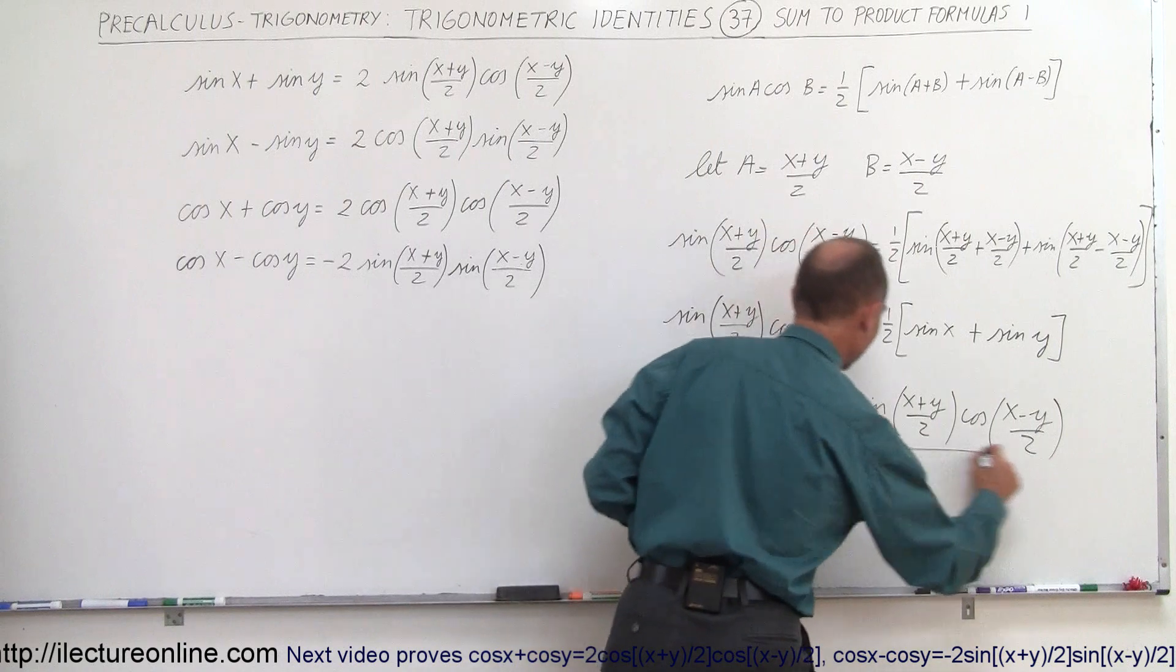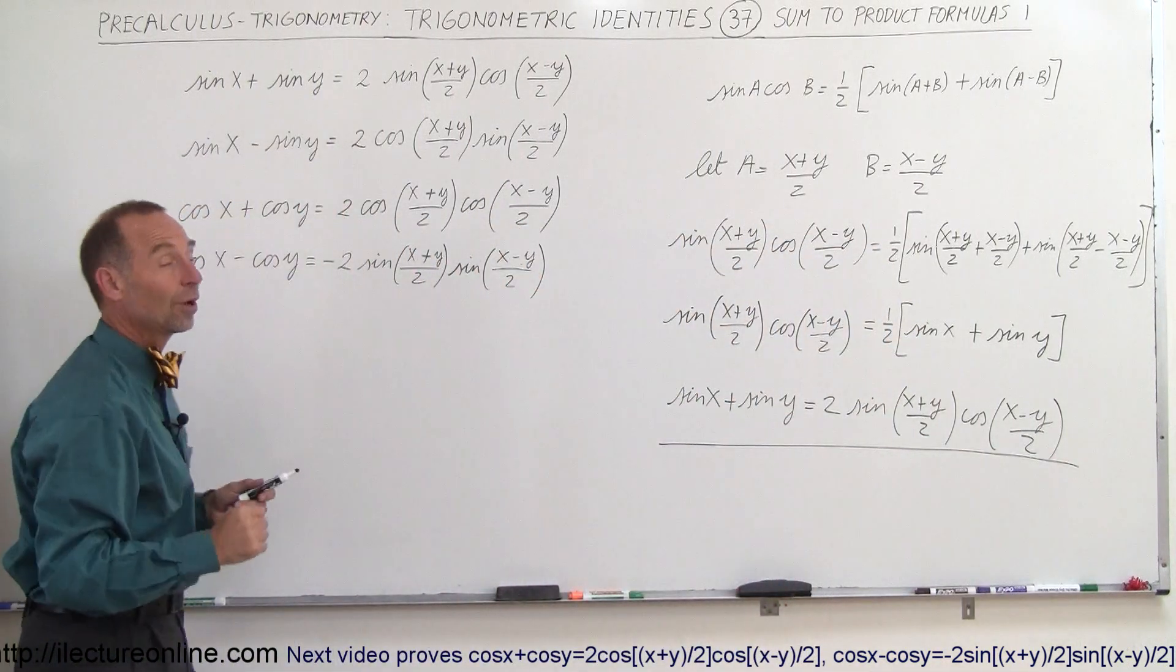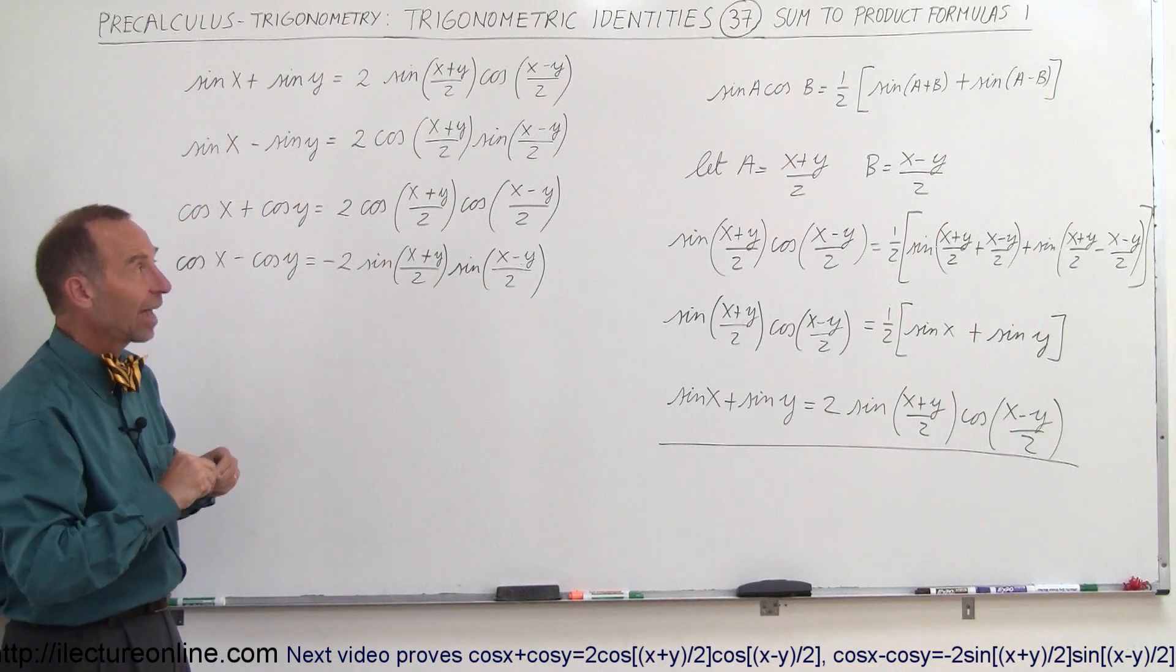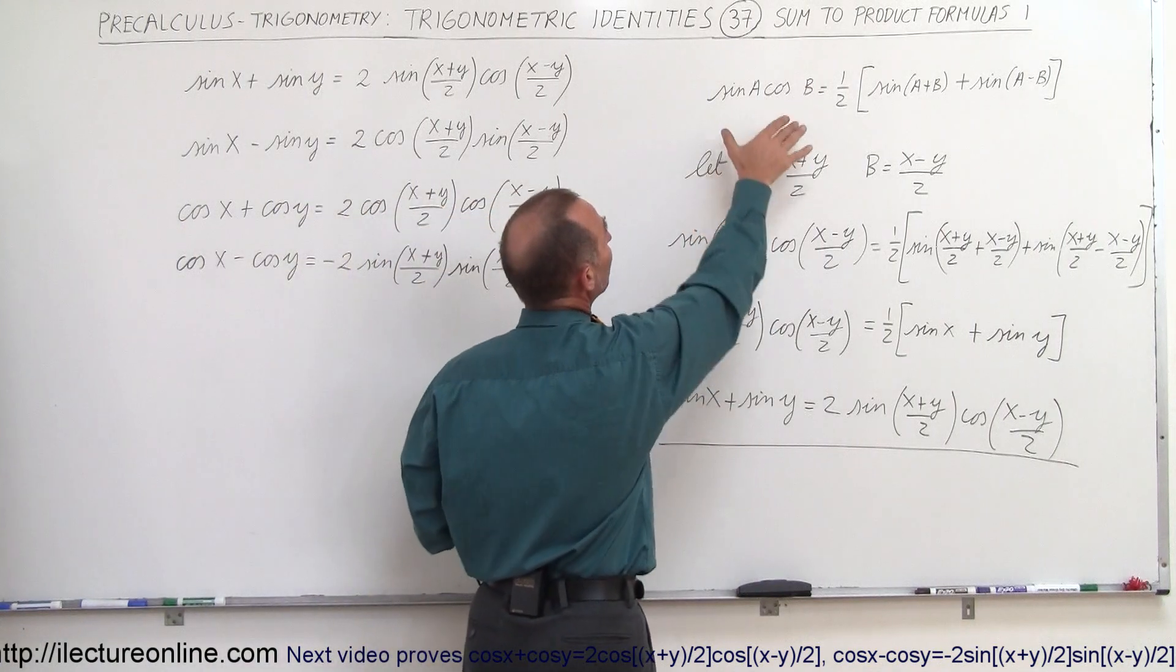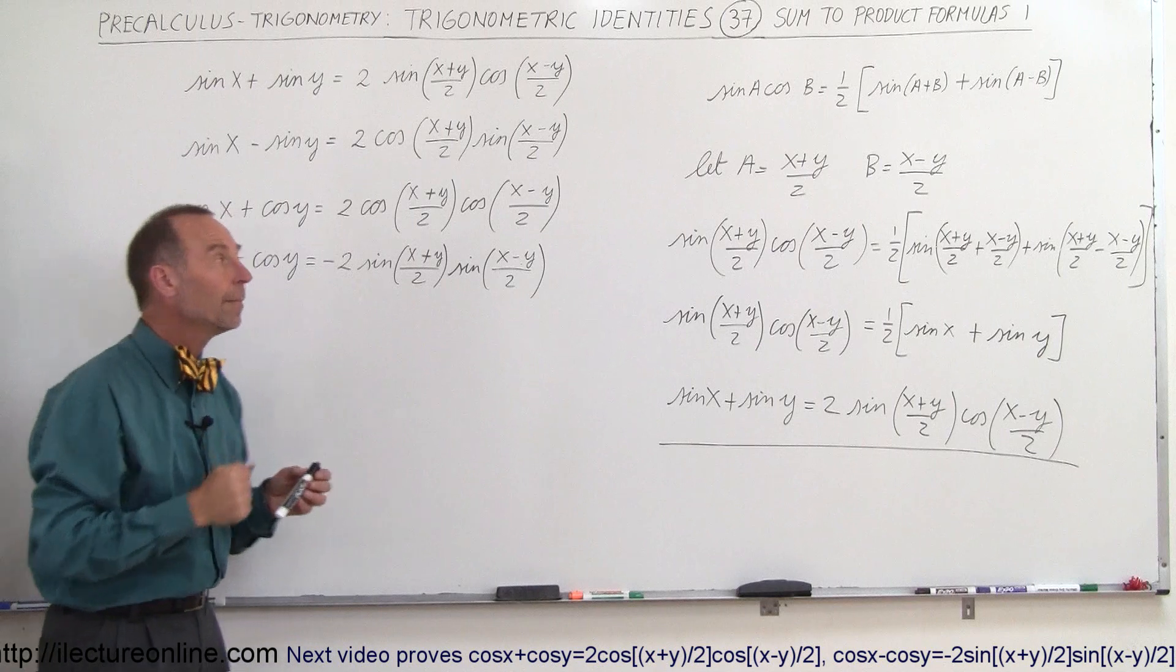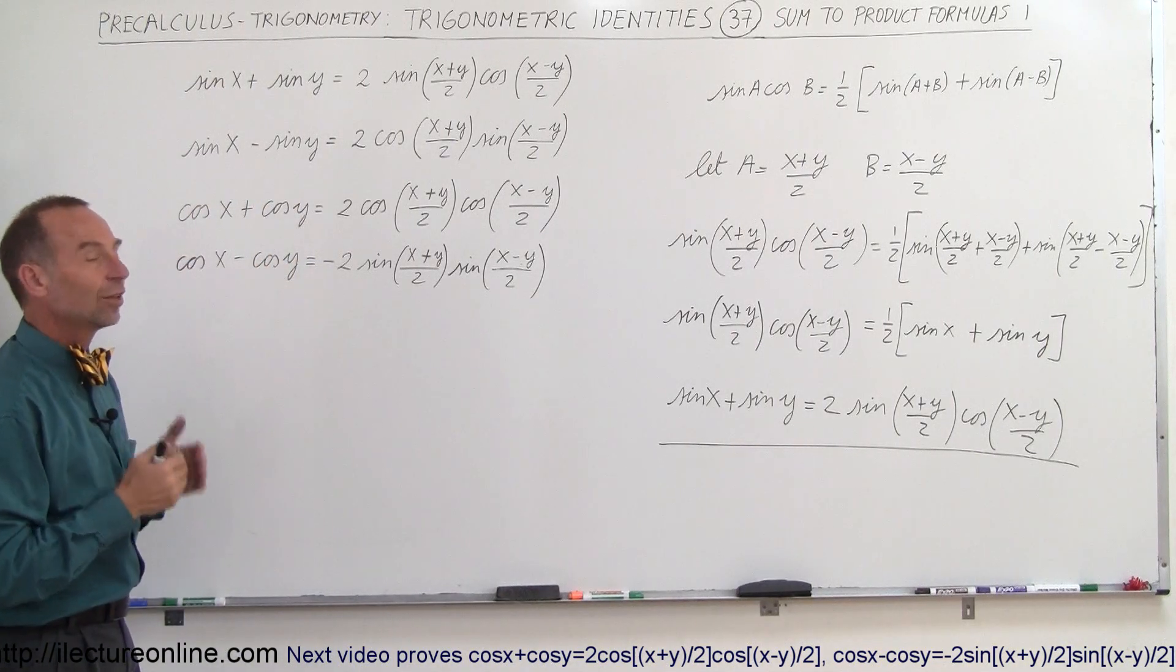And there we go, that's exactly the same as what we have over here as our first equation. And you can already guess that the other three equations are found in exactly the same way. We go ahead and make the same substitution and we use one of the four equations of the product to the sum and then we can convert that to these four equations right here. So that's where they came from.